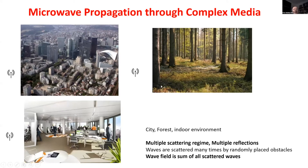When you look at microwave propagation in a city or in a room, you are in a very complex medium — it is not free space. Through a forest, it's the same problem: you have many obstacles, a lot of scattering by each obstacle, and a regime of multiple scattering and multiple reverberation. This makes the field that an antenna creates quite complex — the wave field is the sum of all the scattered waves, and can be very random.